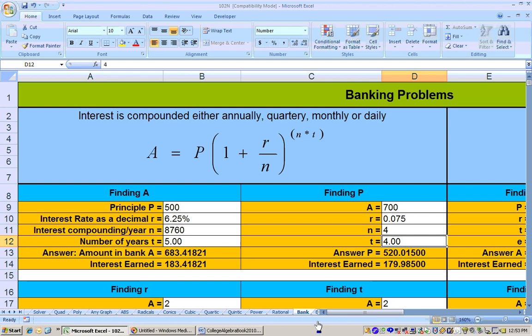I'm on the bank sheet, and we're interested in how much do you need to deposit your principal. So I'm on this area right here finding the principal. It also said that it was compounded quarterly, so I'm using this side of the sheet, and the amount that you want to end up is $700. The interest rate was 7.5% or 0.075 as a decimal, compounded quarterly, so that's 4, and for four years, and right here it tells you the amount of money that you would need to deposit.